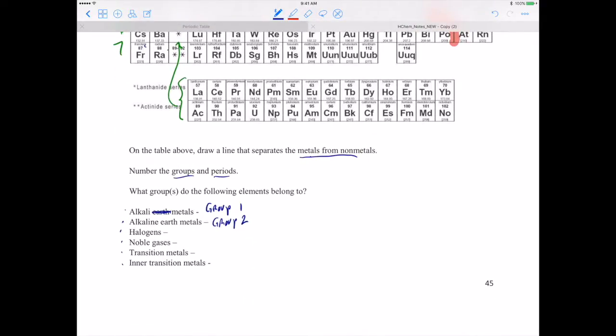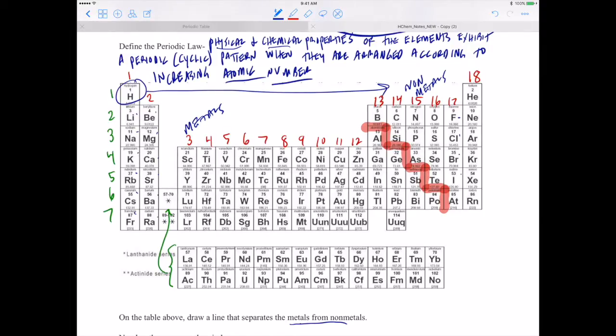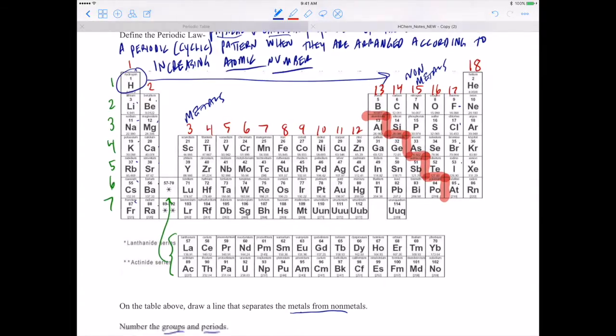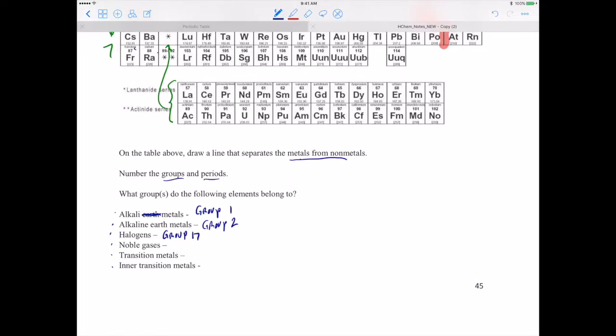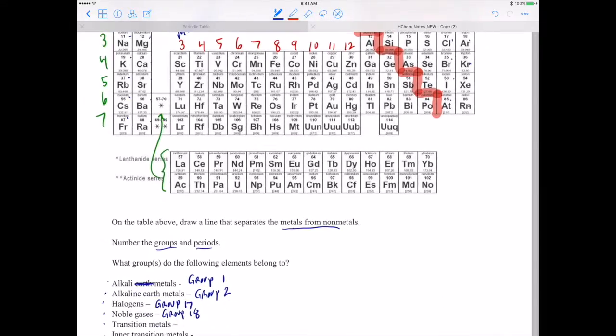How about the halogens? Yeah, they are group 17. So we have fluorine, chlorine, bromine, iodine, and astatine would be our halogens. And the noble gases, they are found in group 18. So we have helium, neon, argon, krypton, xenon, and radon. Those are our noble gases.